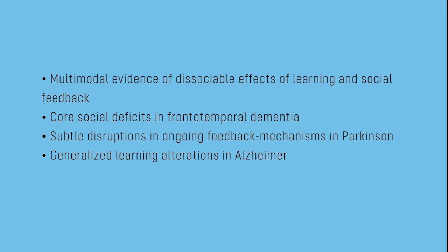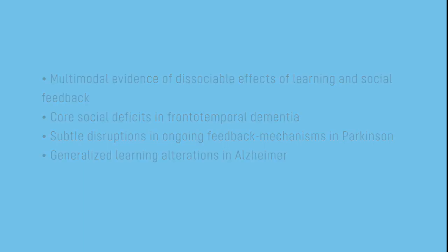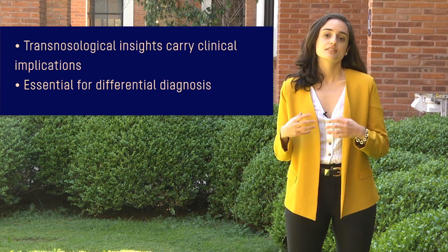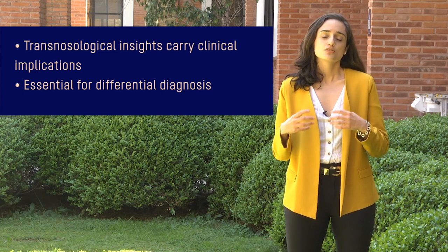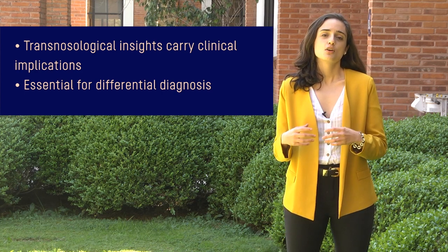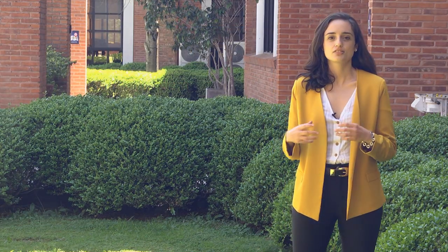The study demonstrates specific patterns across each neurodegenerative model: core social deficits in frontotemporal dementia, subtle disruptions in ongoing feedback mechanisms in Parkinson's disease, and generalized learning alterations in Alzheimer's disease. These new transnosological insights carry clinical implications related to the synergic assessment of social cognition and learning, which proves to be essential for differential diagnosis.